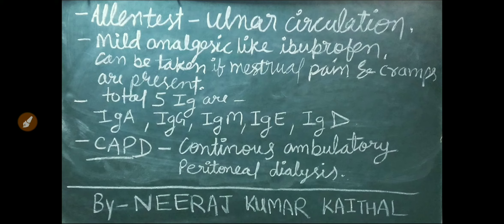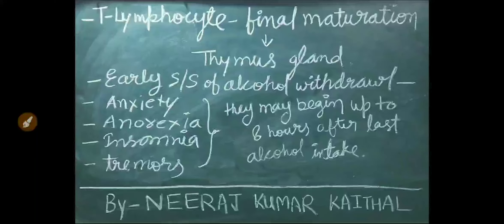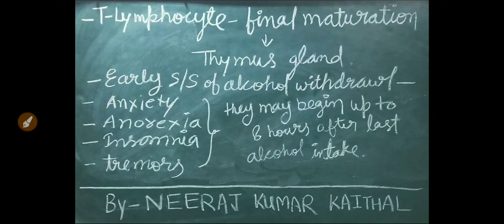Mild analgesics like ibuprofen can be taken if menstrual pain and cramps are present. Five types of immunoglobulins are present: IgA, IgG, IgM, IgE, and IgD. CAPD stands for continuous ambulatory peritoneal dialysis. T lymphocyte final maturation occurs in the thymus gland. Early signs of alcohol withdrawal include anxiety, anorexia, insomnia, and tremors; these symptoms begin up to 8 hours after last alcohol intake.